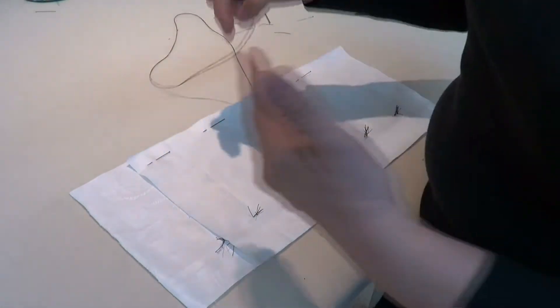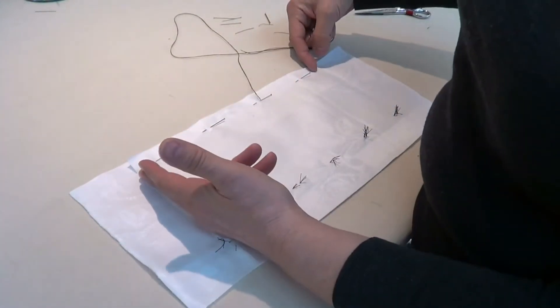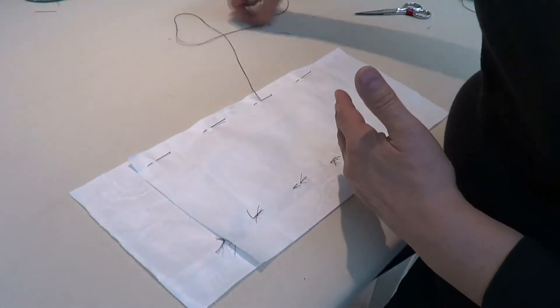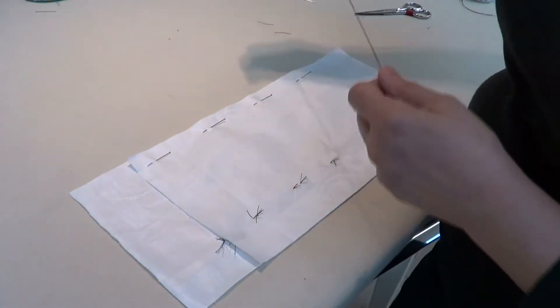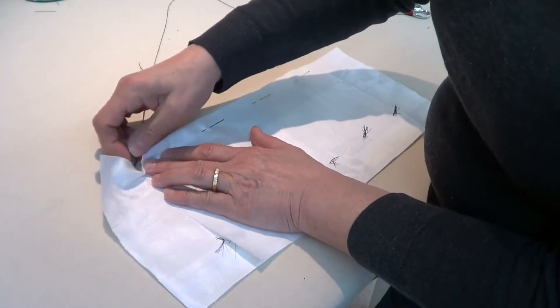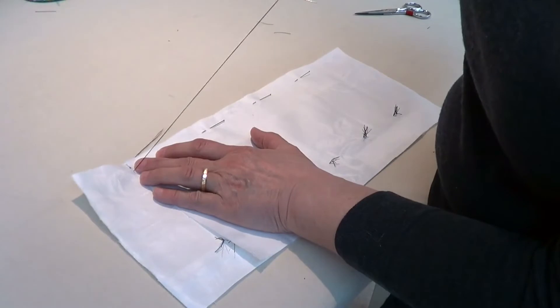Now I can put transfer marks through these layers so that I have some way of registering that meetup point after I've taken it apart. And again, you can use tailor's tacks through one layer for this reason.